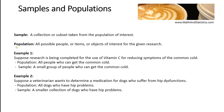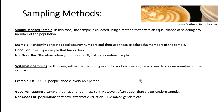A population generally contains all possible people, items, elements, or objects that are of interest in your given research. A sample is a much smaller collection drawn from that population. When you take a sample, you have a lot of different options as to the method that you might want to use to collect your sample.